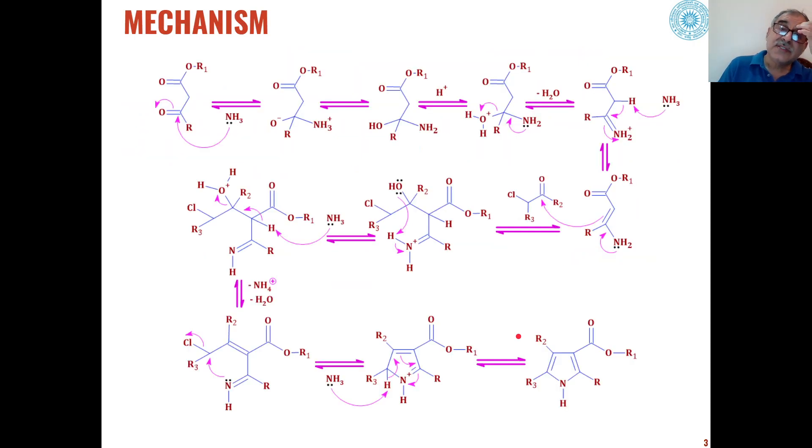As far as mechanism of this reaction is concerned, in the first step, the beta-keto esters react with ammonia as a nucleophile. Ammonia adds to the carbon-oxygen double bond to give us these types of intermediates.